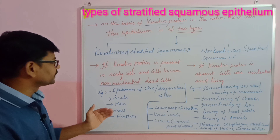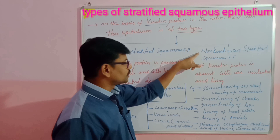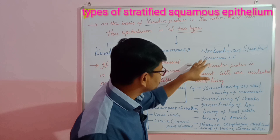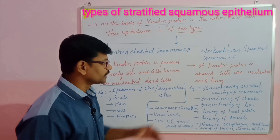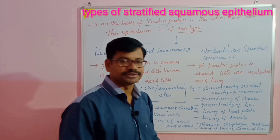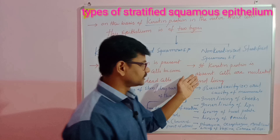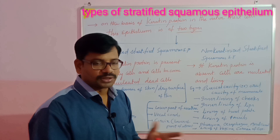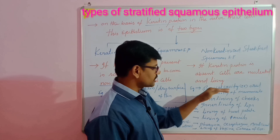The second type is non-keratinized stratified squamous epithelium. 'Non' means keratin is absent. Along with that, the cells contain a nucleus and are living cells — they have cytoplasm and cell organelles, as these are highly dividing cells. This type is also present as an outermost covering layer in certain locations.